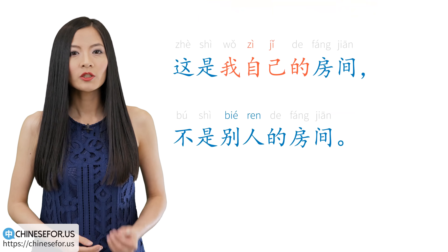Also, if we want to say to do something by someone themselves, we can use this structure: Subject, 自己, verb predicate and object. For example, 经理自己在办公室加班。